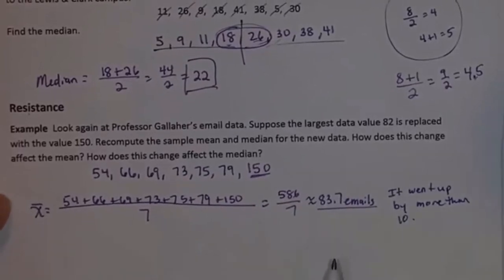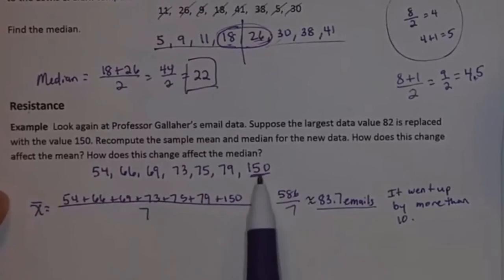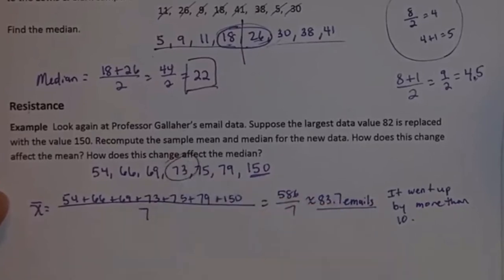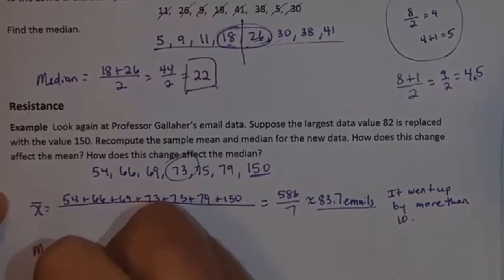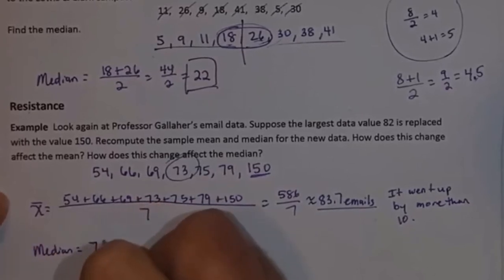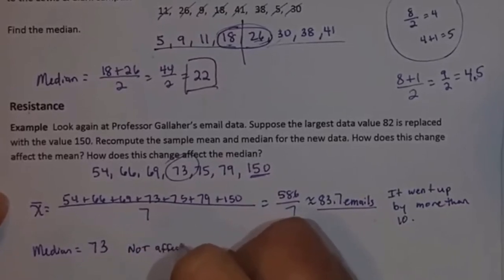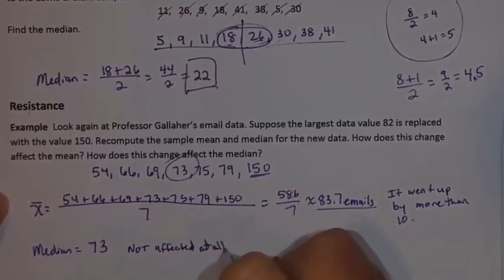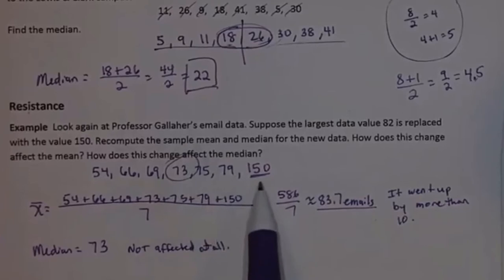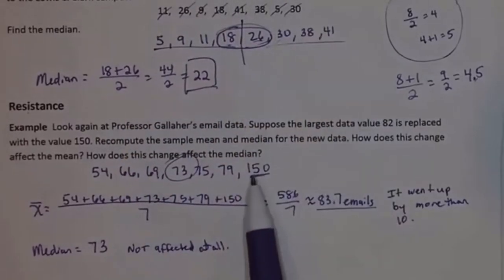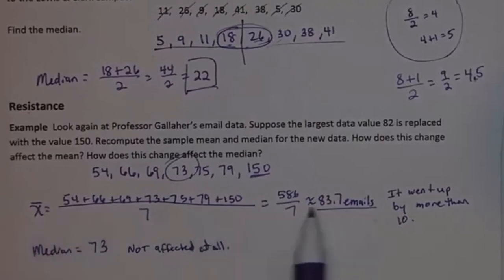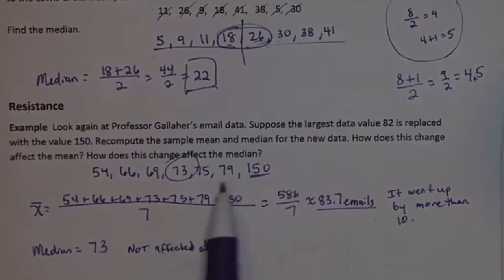What about the median? If I find the median having changed the 82 to 150, what's the median? The median is still 73. The median was not affected at all. So increasing 82 to 150 really hugely affects the mean, but changing the 82 to 150 doesn't affect the median at all.